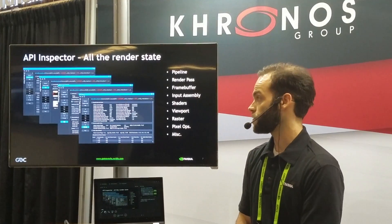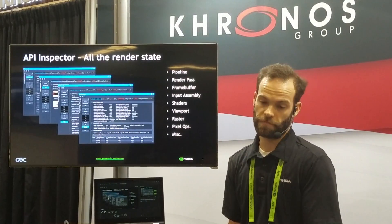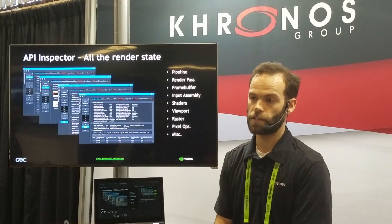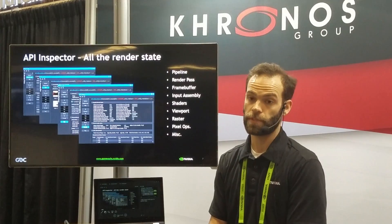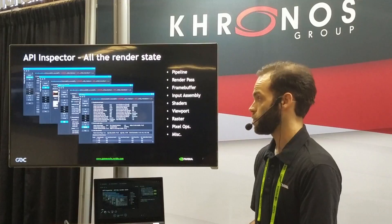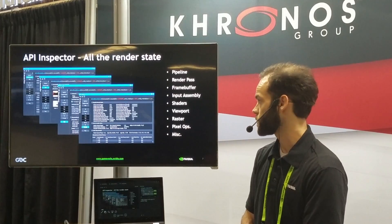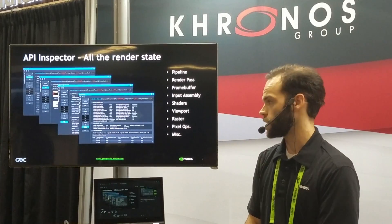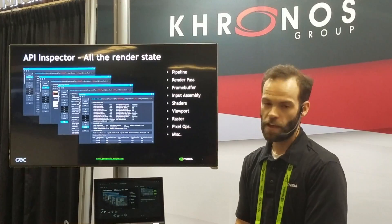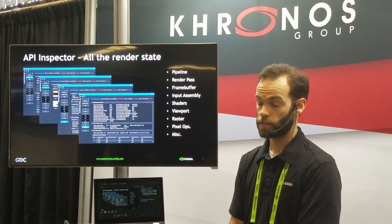Another major feature is the API inspector, where you focus in on your individual draw call and can go through and view all the current pipeline states. You can see your actual pipeline information, your render pass or framebuffer, all your input assembly, shaders, reports, et cetera. Basically every single piece of state that is exposed in Vulkan is visible here.